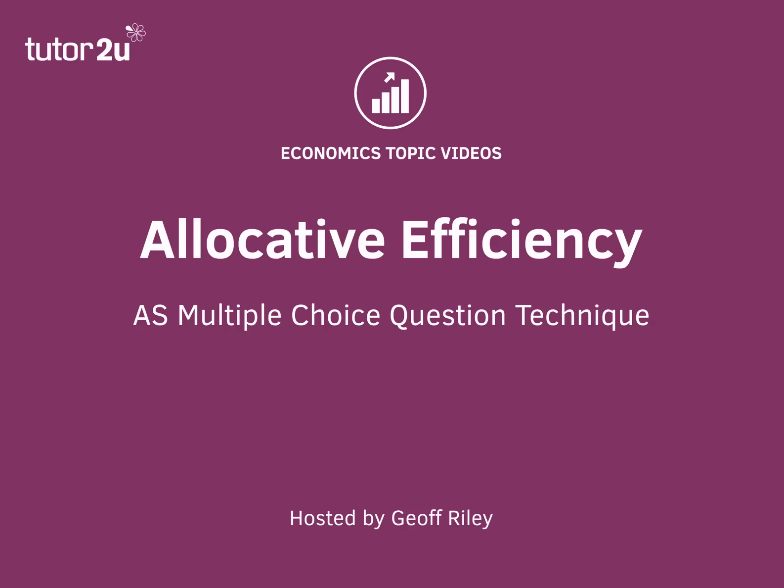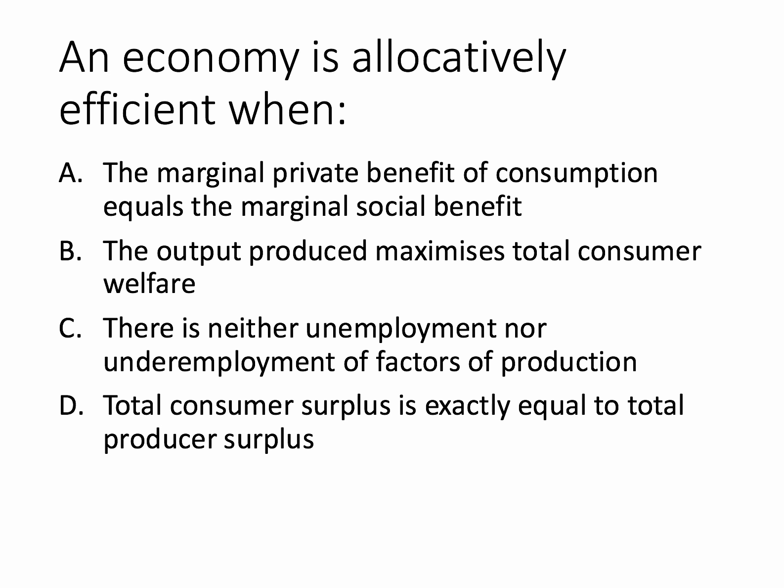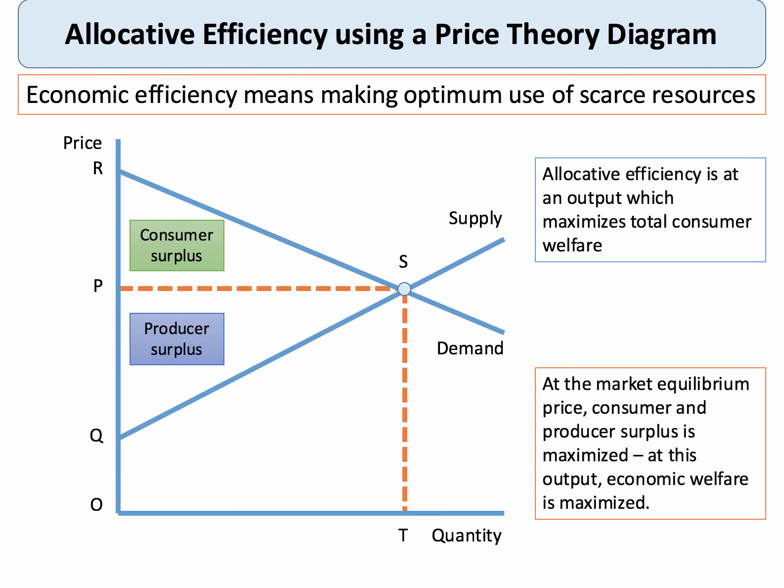Let's have a look at an AS micro multiple choice question looking at the concept of allocative efficiency in markets. Here's the question: an economy is allocatively efficient when — essentially a definition question, a bit of revision.